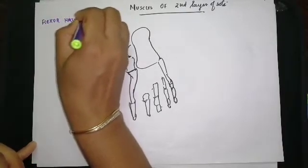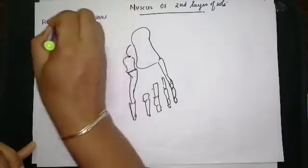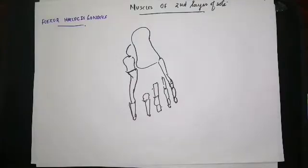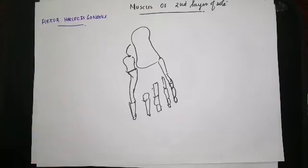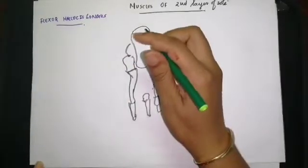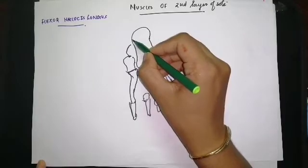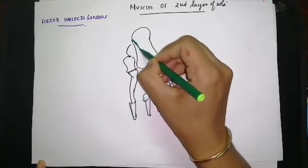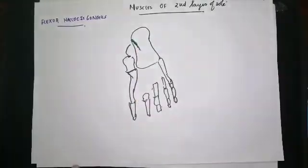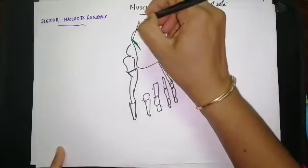The first muscle is the flexor hallucis longus. Even though it acts on the great toe, the origin of this muscle is on the fibula — specifically from the lower three-fourths of the posterior surface of the fibula, except the lower 2.5 centimeters, and from the interosseous membrane. The tendon of this muscle passes downwards and comes here into the second layer of the sole.